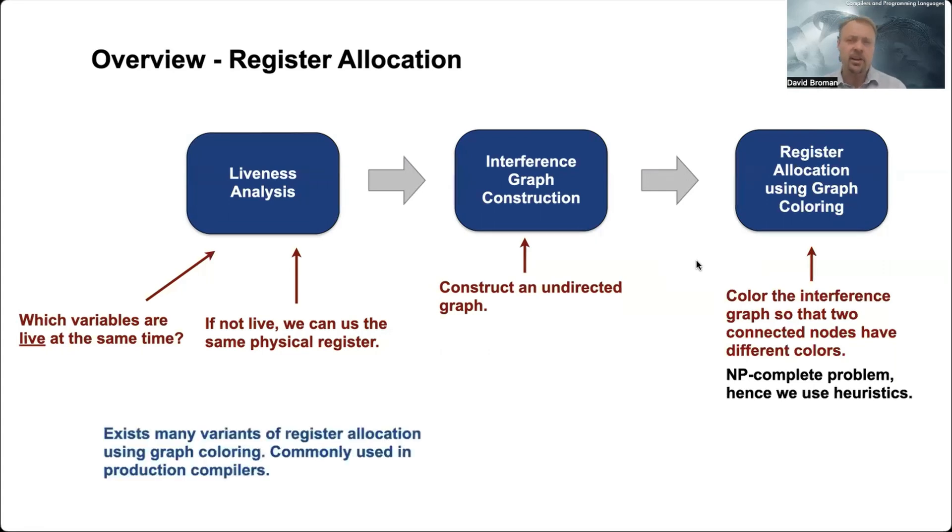This kind of register allocator is used a lot in compilers when you do ahead-of-time compilation, but it's not so much used in compilers where you have just-in-time compilation, because then it's really important that the register allocation itself goes really fast. Other kinds of register allocators are so-called linear scan algorithms that I will not talk about more today.